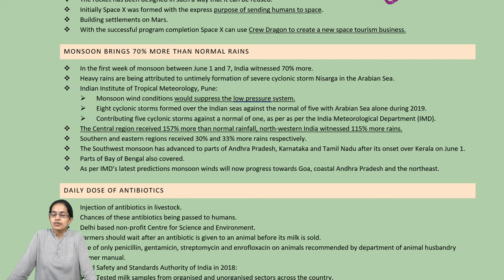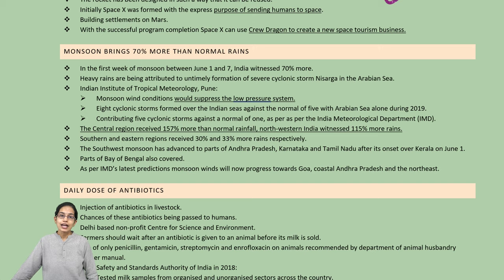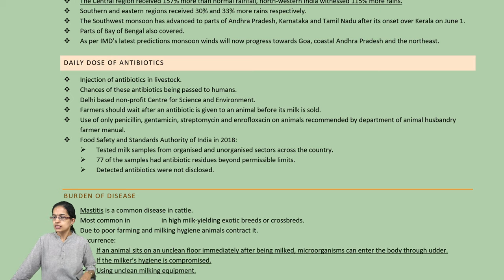In India, we have seen nearly 70% higher rainfall than normal in the first week of June itself. Central India received nearly 157% higher than normal rainfall, and Northwest India around 115% more than normal. As per IMD's prediction, this is because of Cyclone Nisarg that had entered.